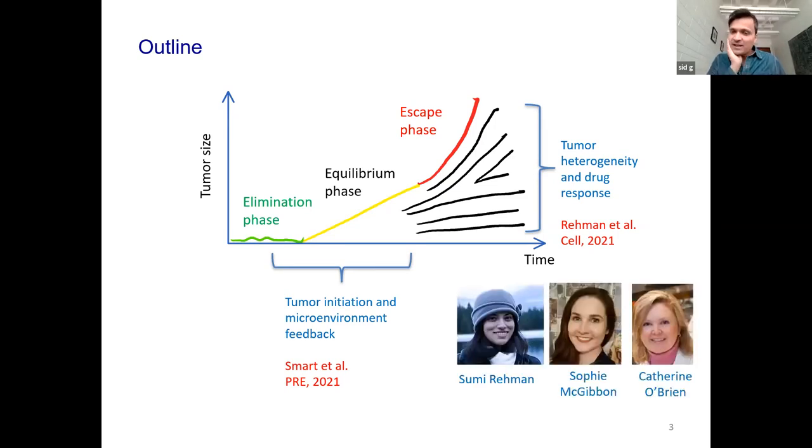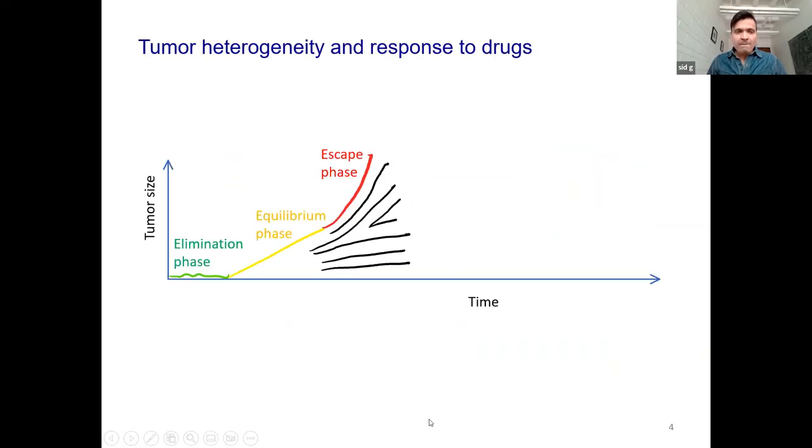The first part was done in collaboration with a pathologist here in Toronto. The experiments were done by a postdoc, Sumi Raiman, who was an experimentalist, and much of the theory was done by a physics graduate student in my group, Sophie. So coming back to this schematic, let's take this cartoon a little bit more.